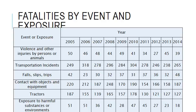This table shows the number of fatalities in each year for each event or exposure selected. The categories of transportation incidents, contact with objects and equipment, and tractors show the largest numbers of fatalities in every year studied. The number of fatalities appears to decrease in some categories but increase in others, most likely due to regulations and technological advancement that relates to some equipment and not others.